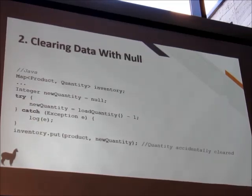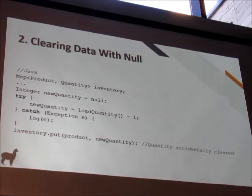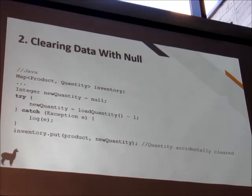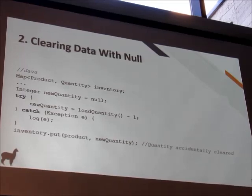Here's another null example. We're initializing an inventory map. We start with a new quantity being null and want to grab some data from the database. We call load quantity, then an exception is thrown, we log it — all good. Then we try to put that null value into inventory, not realizing it's null. That wouldn't be possible in Kotlin — we have to handle it in the catch block.